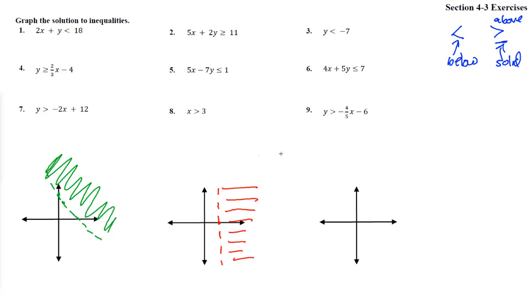Alrighty, and the last one. Y is greater than negative 4 fifths x minus 6. So we have the point 0, negative 6 right here. And then we go on a slope down 4, 1, 2, 3, 4, and over 5, 1, 2, 3, 4, 5.